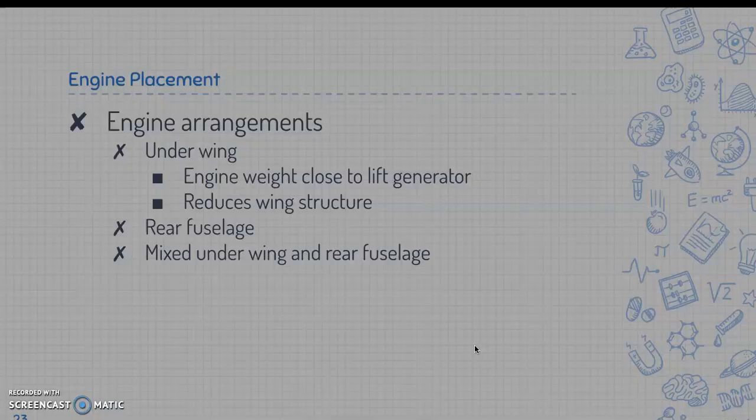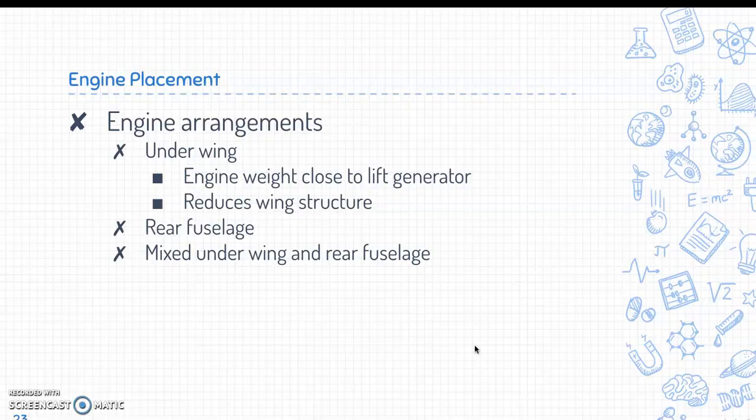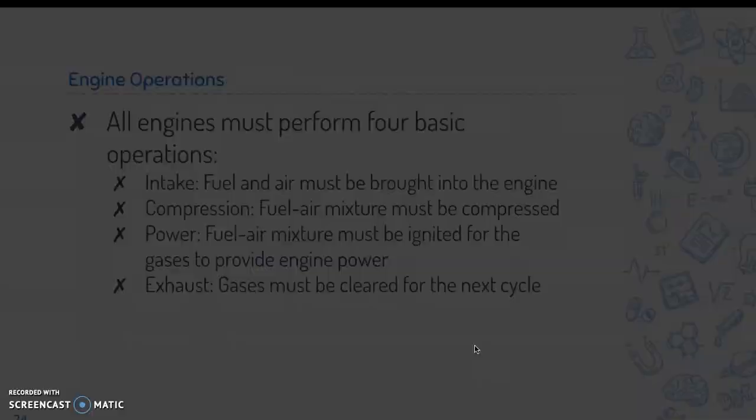For engine placement, there are a few arrangements. First, underwing placement — the engine weight is close to the lift generator and it reduces wing structure. Engines can also be placed in the rear fuselage, and sometimes there is a mix of underwing and rear fuselage placement.